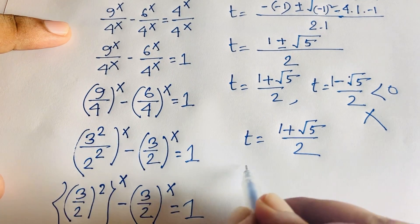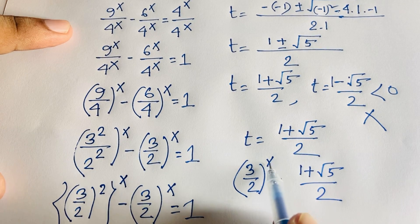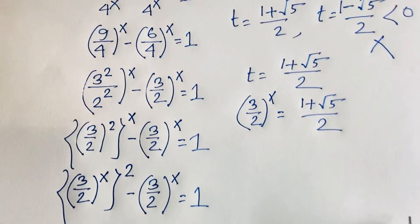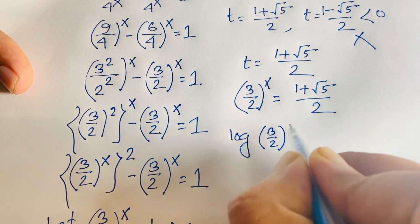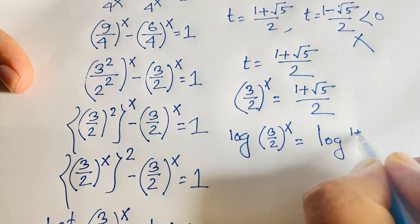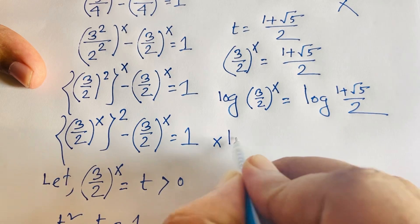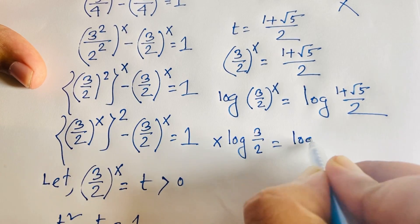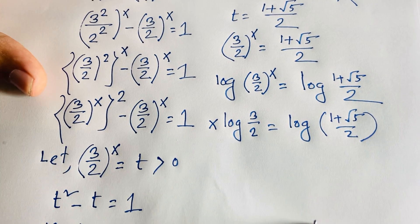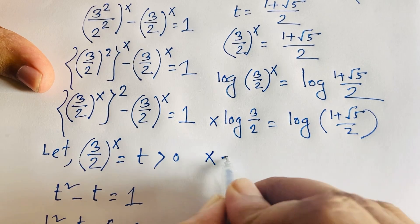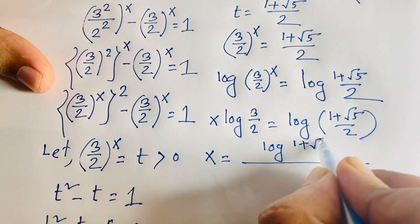So (3/2)^x equals (1 plus √5)/2. Taking the natural log of both sides: x times log(3/2) equals log((1 plus √5)/2). Dividing both sides by log(3/2), we get x equals log((1 plus √5)/2) divided by log(3/2).